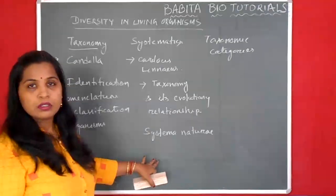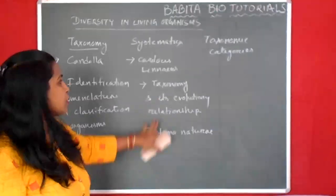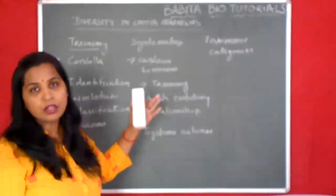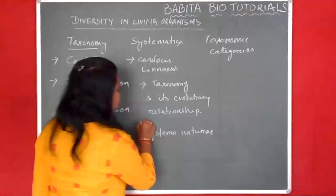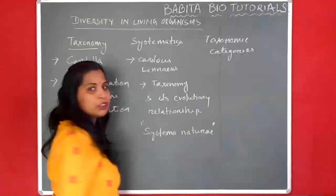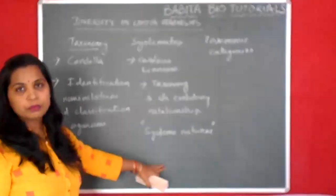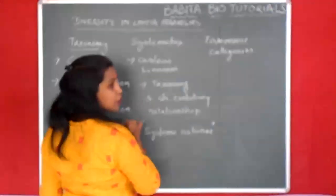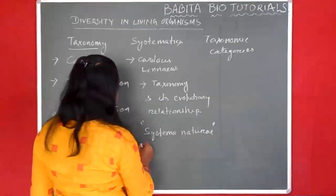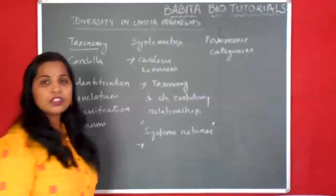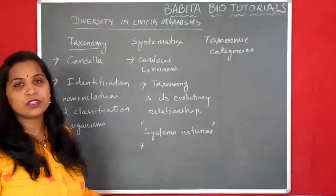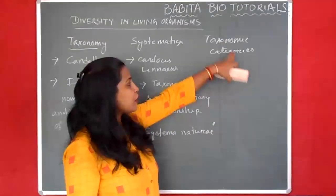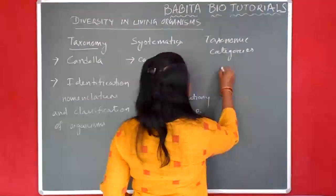In his book, he wrote about systematics, which means taxonomy and its relations to evolution. The name of the book is Systema Naturae — sometimes this comes up in MCQ exams. Carolus Linnaeus is known as the Father of Taxonomy, and he first divided organisms on the basis of levels, and that level is known as taxonomy categories.